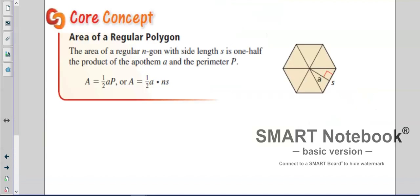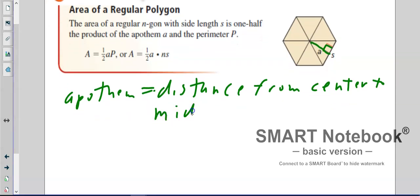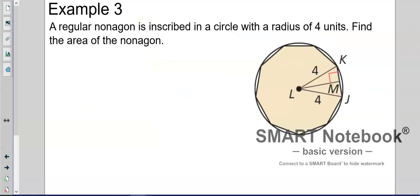What is the area of a regular polygon? The area of a regular polygon is one half the product of the apothem A and the perimeter P. The apothem is this line right here that forms a right angle with the side of the shape. The apothem is the distance from the center to the midpoint of the side. It's a bisector, a perpendicular bisector.